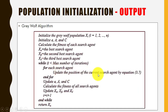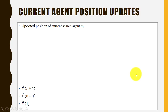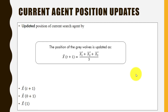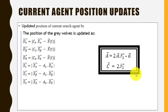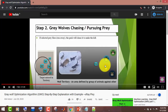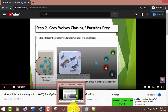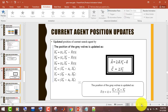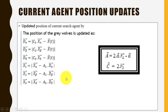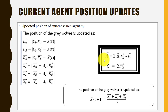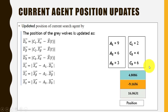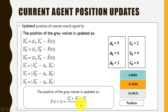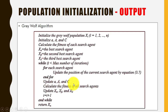Next, we update the positions of the wolves using the position update equation. The value for t (current iteration) is zero at this point. The mathematical model for hunting — including variables C1, C2, C3 and A1, A2, A3 — was already discussed in the previous video. You can see x-alpha, x-beta, and x-delta values here; put the values in and you will get the updated result.